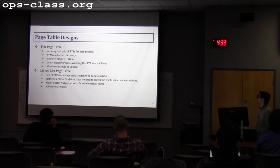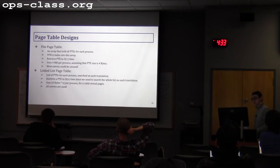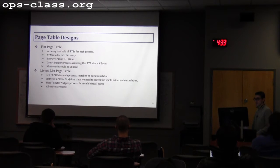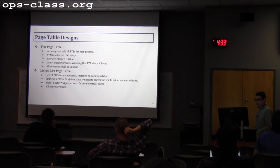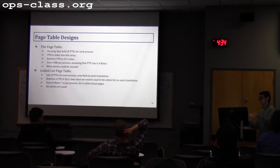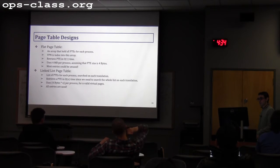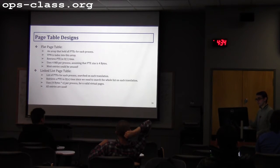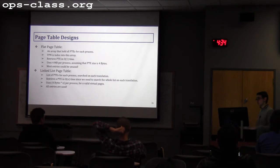Let's go through the page table designs. One option you shouldn't use because you'll run out of memory is the flat page table, which allocates an array holding all PTEs for each process. With 20-bit VPNs, you have 2^20 = 1,048,576 virtual pages. Even if you don't use all those pages, you'd allocate memory for all of them, and in OS/161 you'd run out of memory. So don't use the flat page table. In a flat page table, the VPN is the index into the array, so you don't define a VPN in the PTE, and retrieval is O(1). However, most entries could be unused.